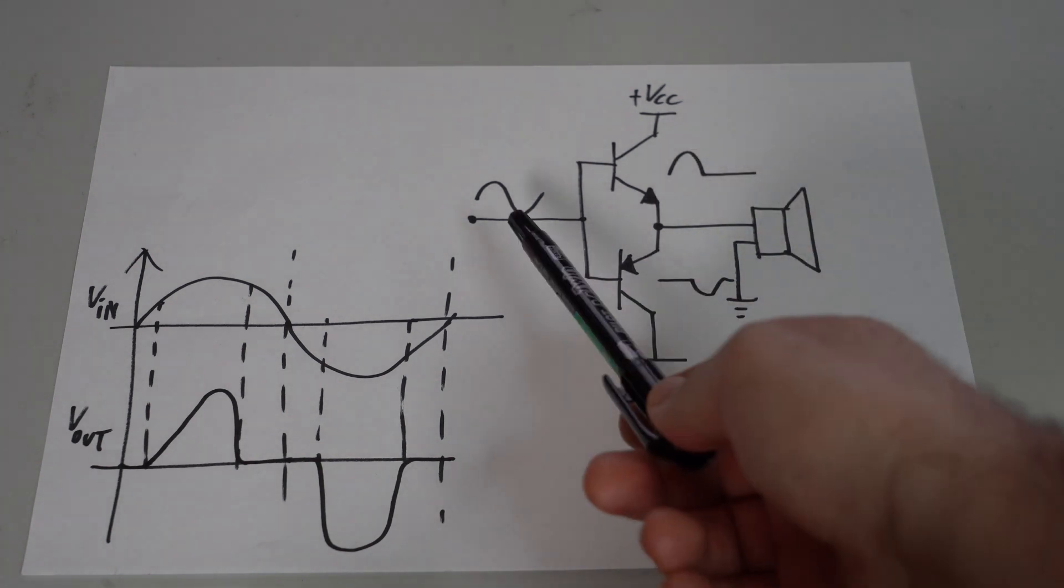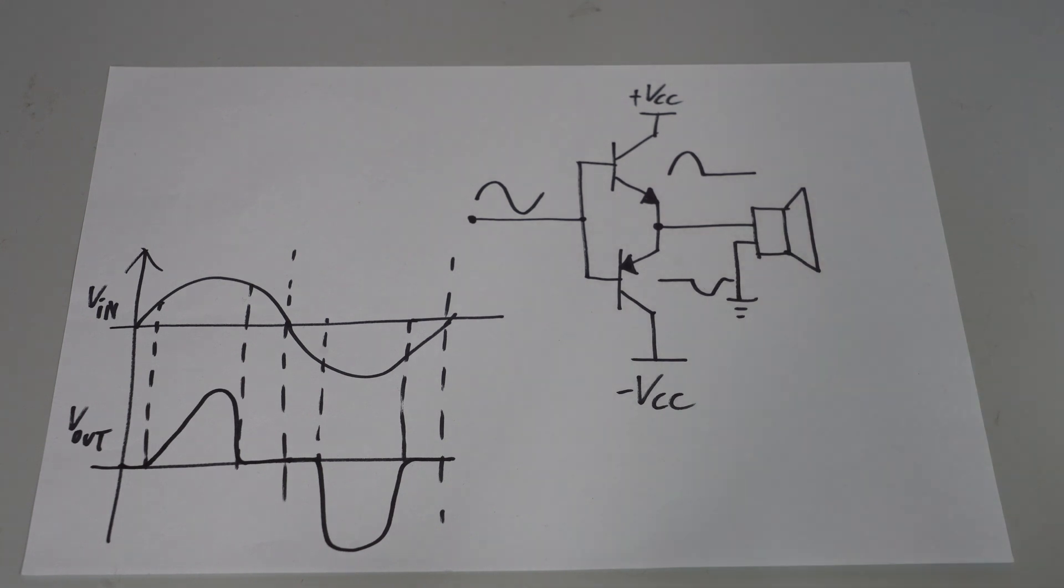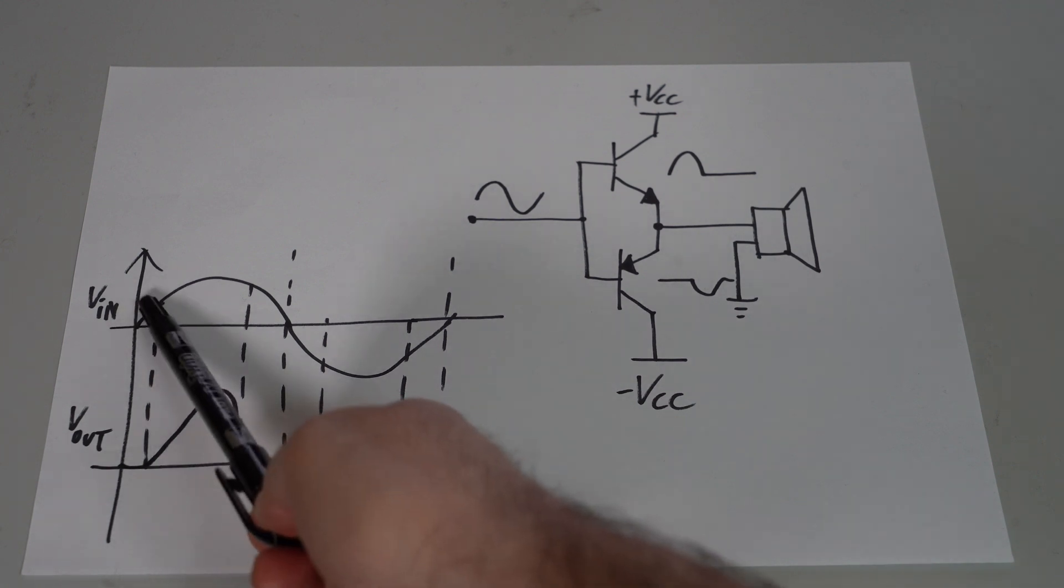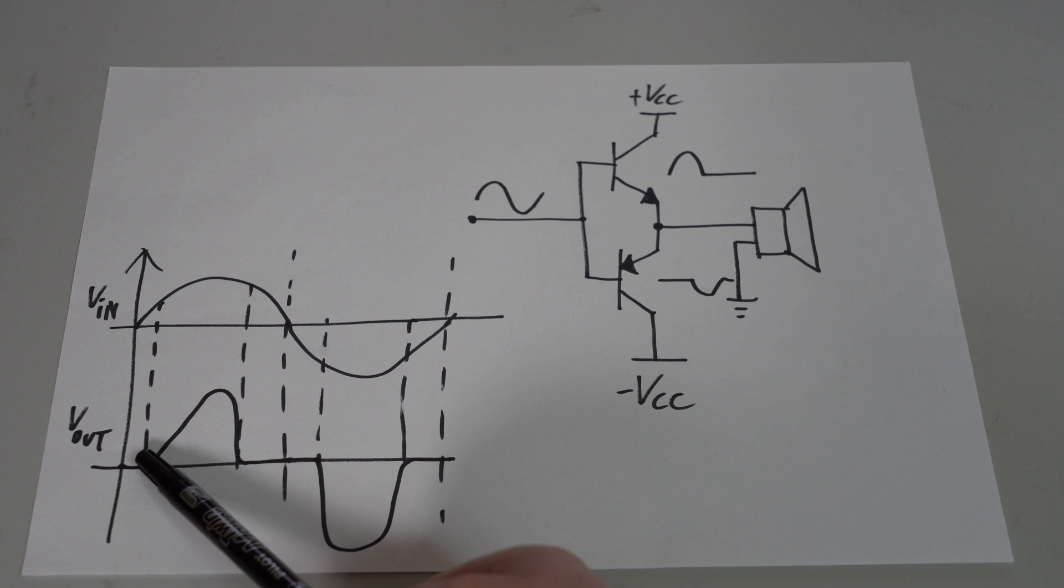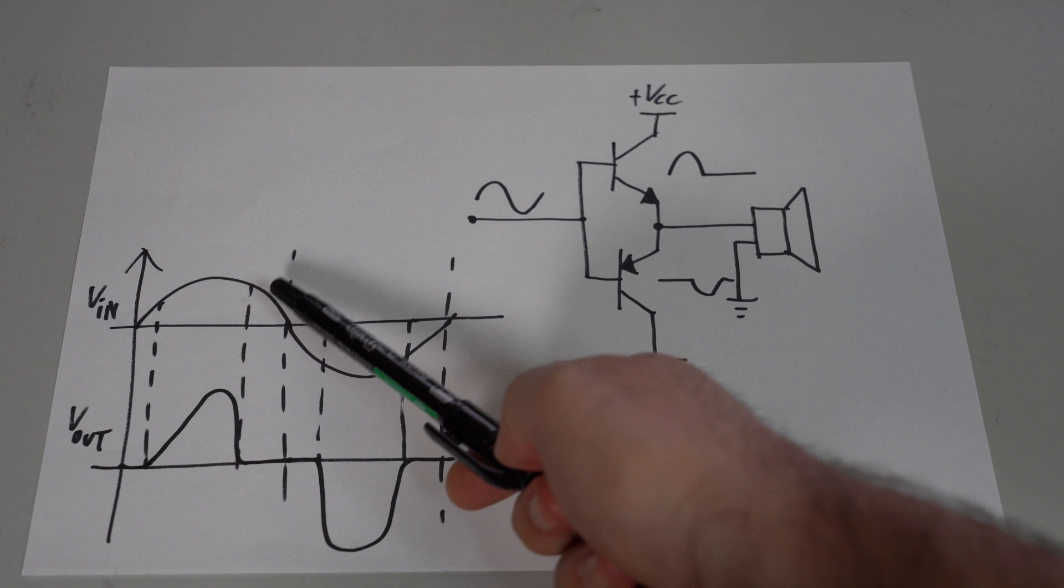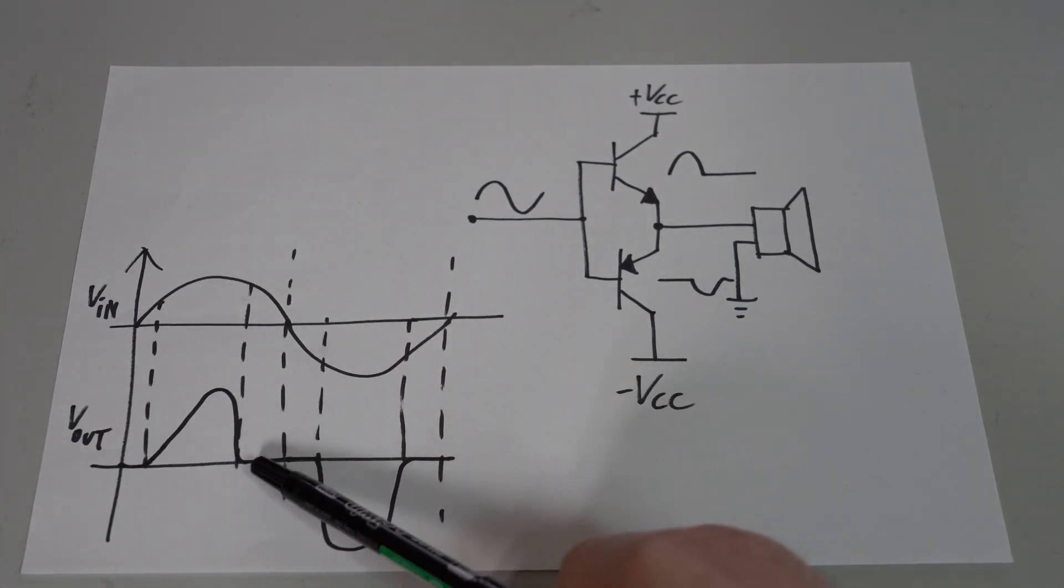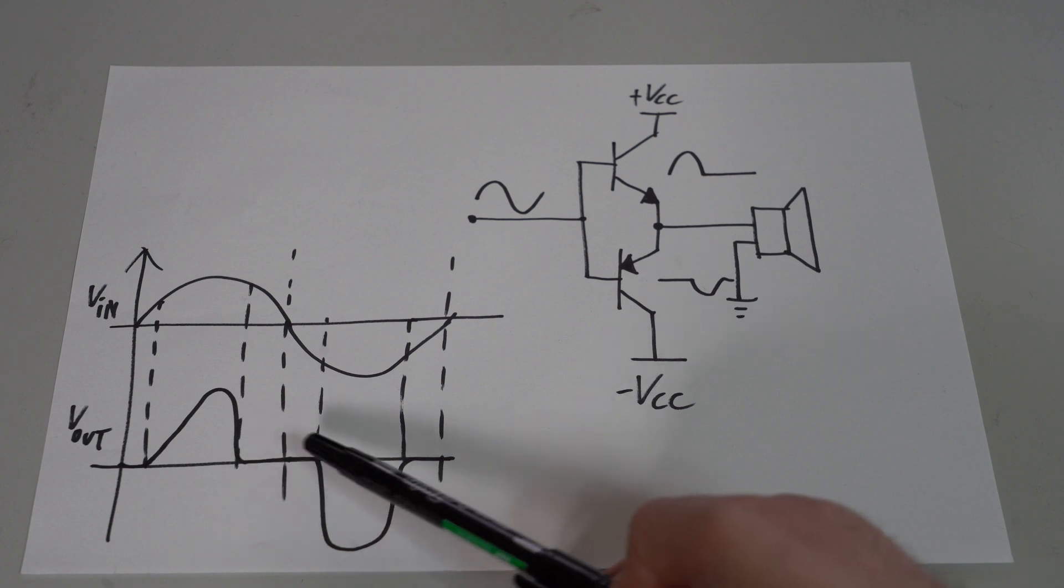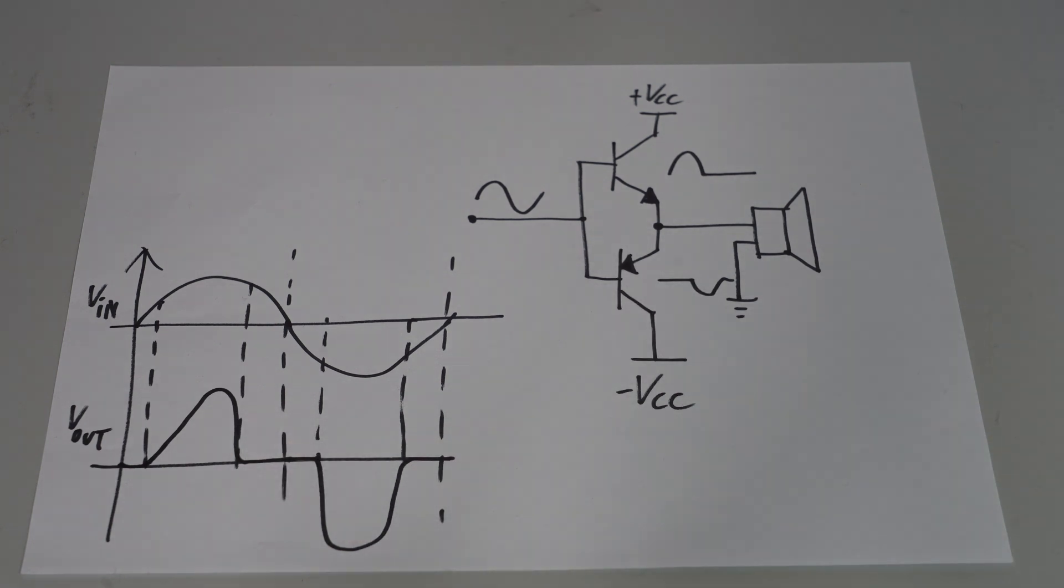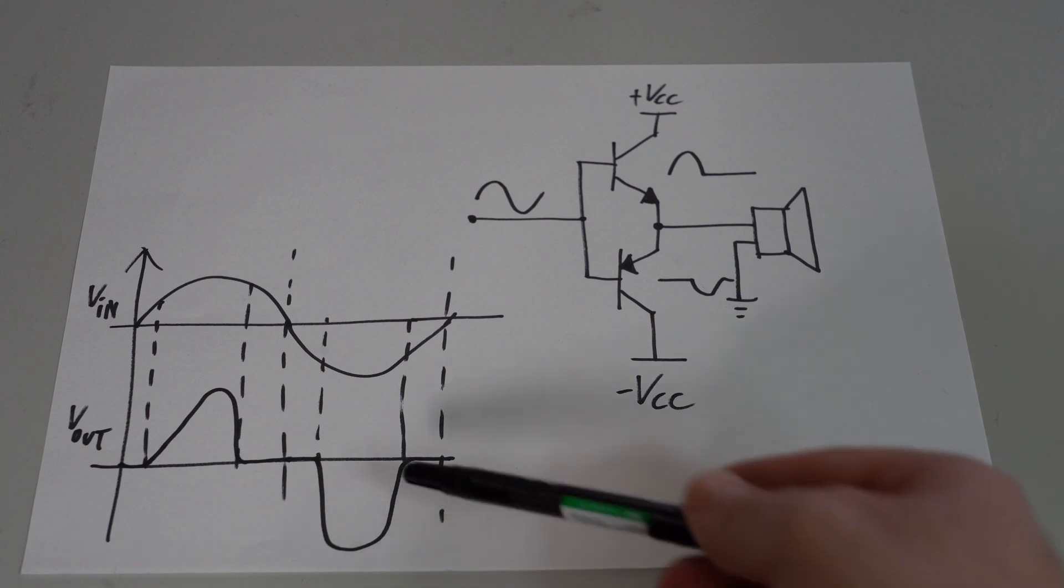So that means that for an input voltage that swings higher than plus minus 700mV, we will get some horrible distortion at the output which looks something like this. So the output stays at zero until the input voltage exceeds around 700mV. At that threshold, the top transistor will start conducting like this. Then below 700mV it will be in cutoff, so we get zero volts at the output. And then the cycle repeats on the negative cycle as well. So we need a way to get rid of this crossover distortion.